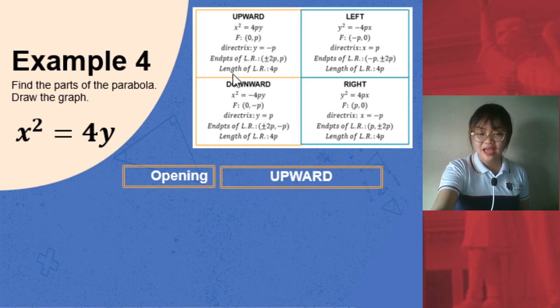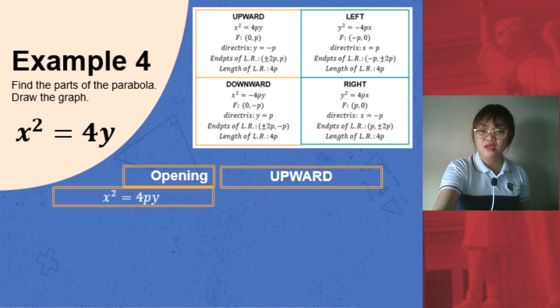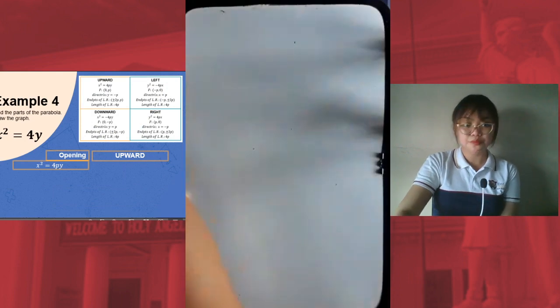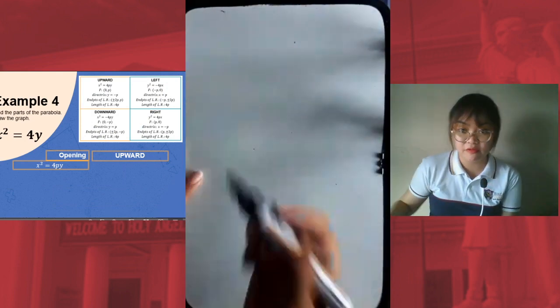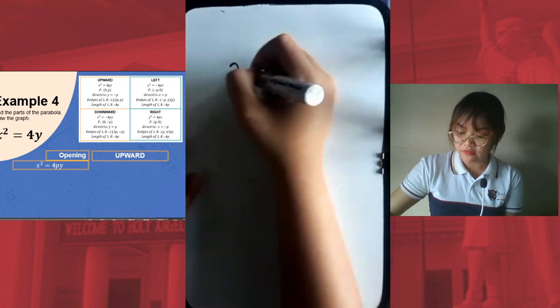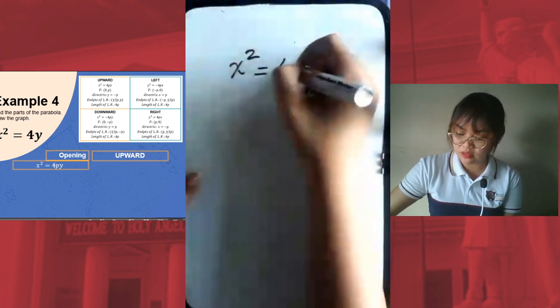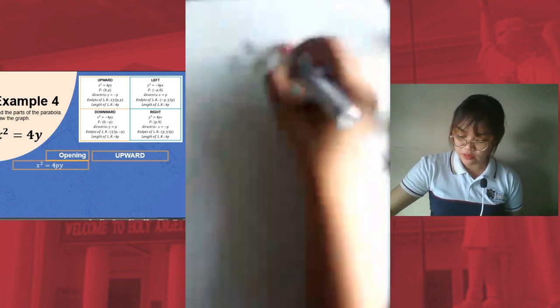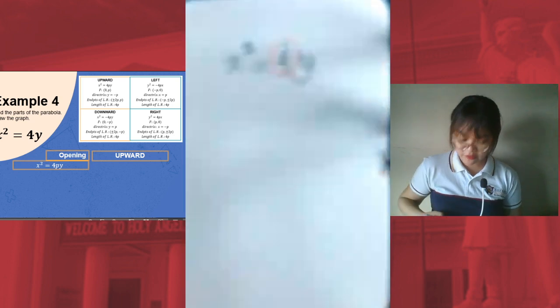After that, let's look at the formula for the standard form. It's x squared equals 4py. From our equation, we have to identify the p-value. So for the p-value, let's solve that together. In order, this is how you determine the p-value from the equation. You are given x squared equals 4y. First, you have to take the numerical coefficient. So this is your numerical coefficient: 4.